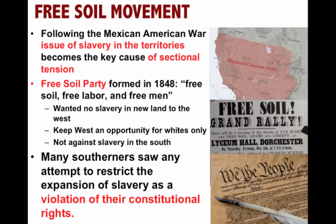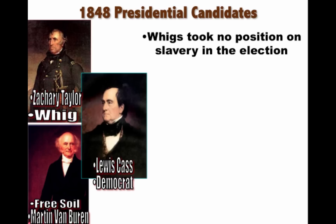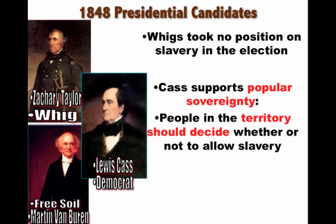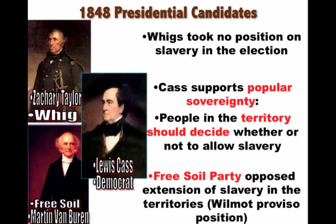The big question is what are we going to do with all this land? In 1848, there's an election. The Whigs pick Zachary Taylor, the war hero. They take no position on the issue of slavery in the election. The Democrats pick Louis Cass, and their whole platform on slavery is popular sovereignty — people in the territory should decide whether or not to allow slavery. The Free Soil Party runs a candidate, the former Democrat Martin Van Buren, and they are opposed to the extension of slavery in the territories, kind of like the Wilmot Proviso position. And Zachary Taylor wins the election.